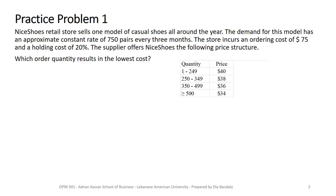The manager is wondering what should be the optimal order quantity for this kind of shoes. We have a demand of 750 pairs every three months — that's the quarterly demand. The ordering cost S is 75, the holding cost rate I is 20%, and the supplier provides a price structure showing quantity discounts: as the manager increases his order quantity, he can get a better price. The question is what should be our optimal order quantity to minimize cost.